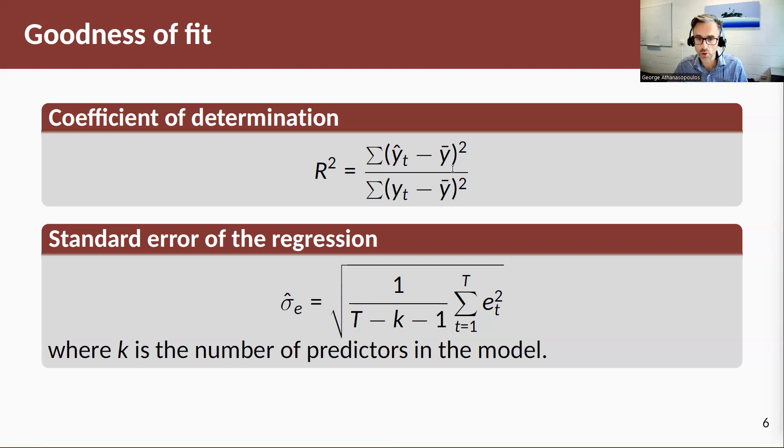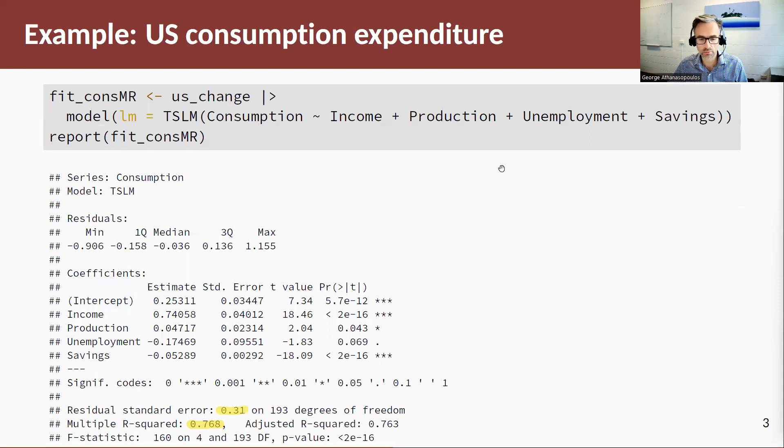Hence, for our model, our R-squared is 0.768, and the standard error is 0.31.